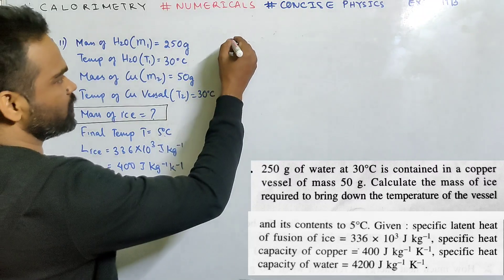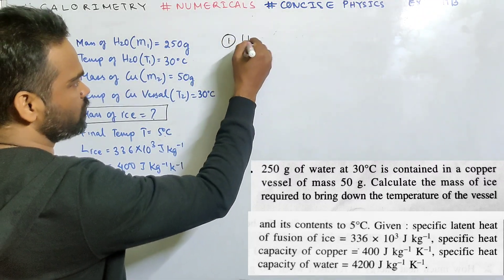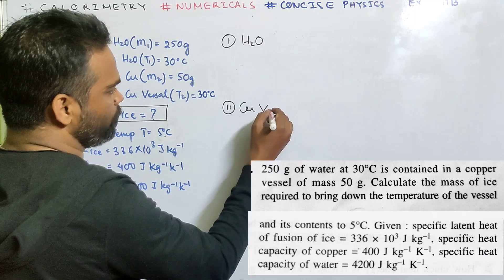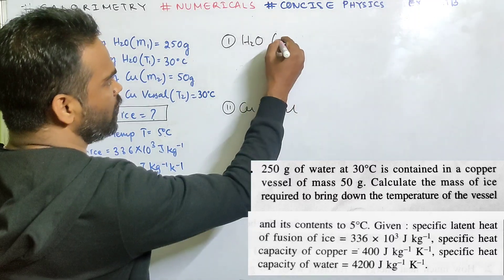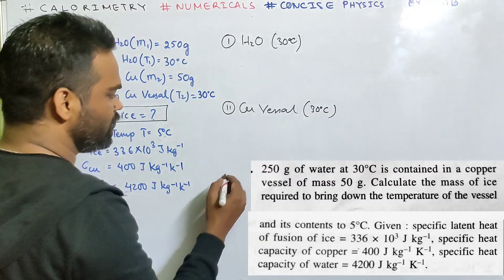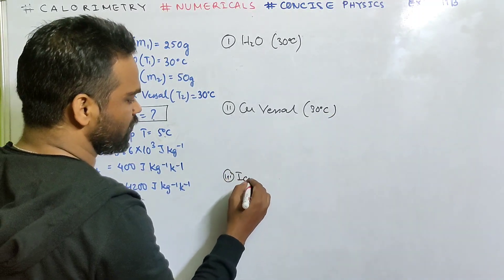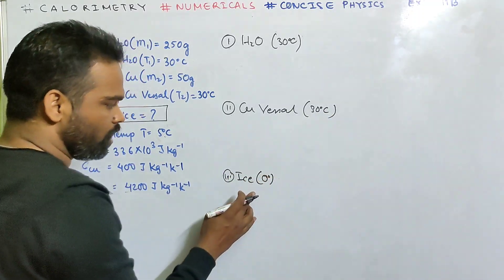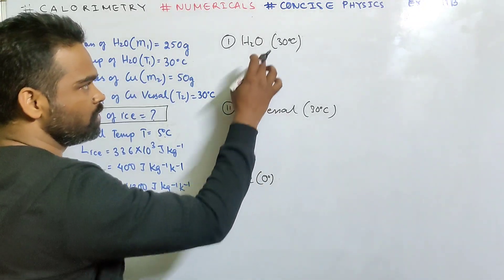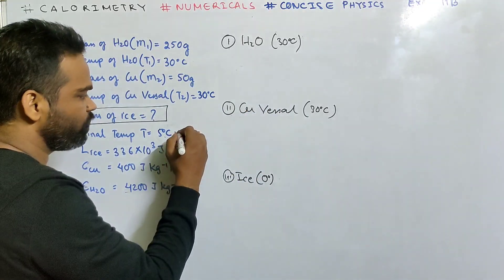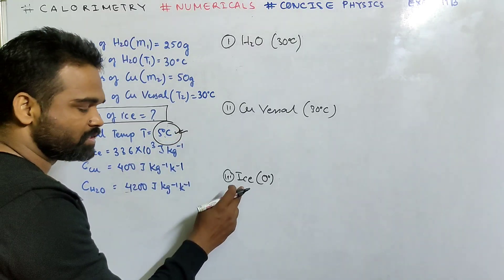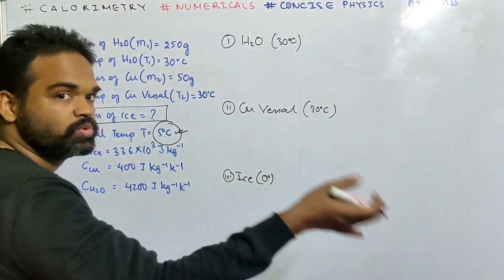There are 3 things. First, there is water. There is a copper vessel. Both are at 30 degree centigrade. And lastly, there is ice at 0 degree. How much ice is required to bring down the temperature of these two to 5 degree centigrade? This is the final temperature, which means ice will gain heat and water and copper will lose heat.